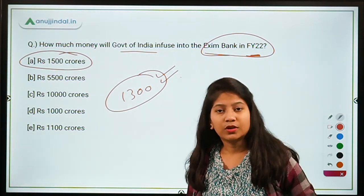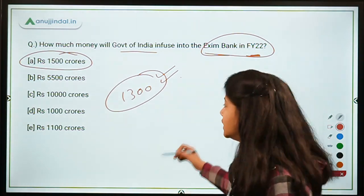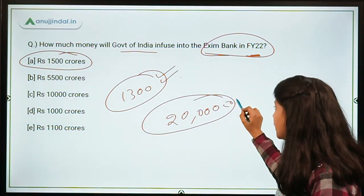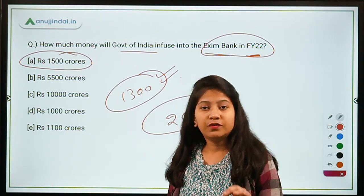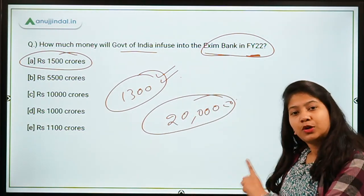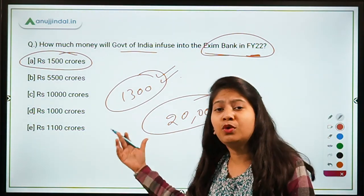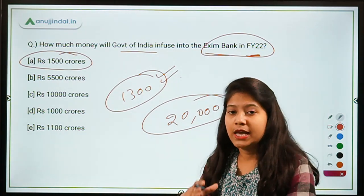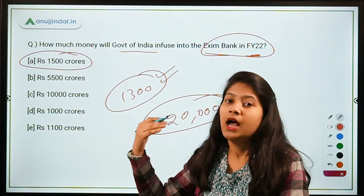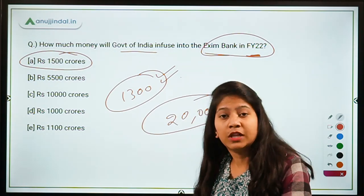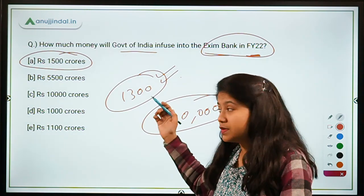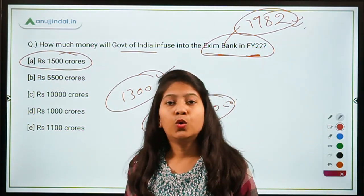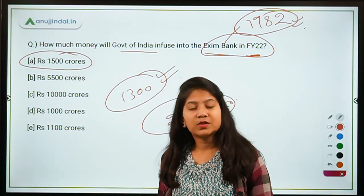The authorized capital of EXIM Bank was increased by the Government of India in 2019 to ₹20,000 crores — so if asked in the exam, the present authorized capital of EXIM Bank is ₹20,000 crores. EXIM Bank deals with credit related to exports and imports and also provides lines of credit to other countries on behalf of the Government of India. It was established in the year 1982.